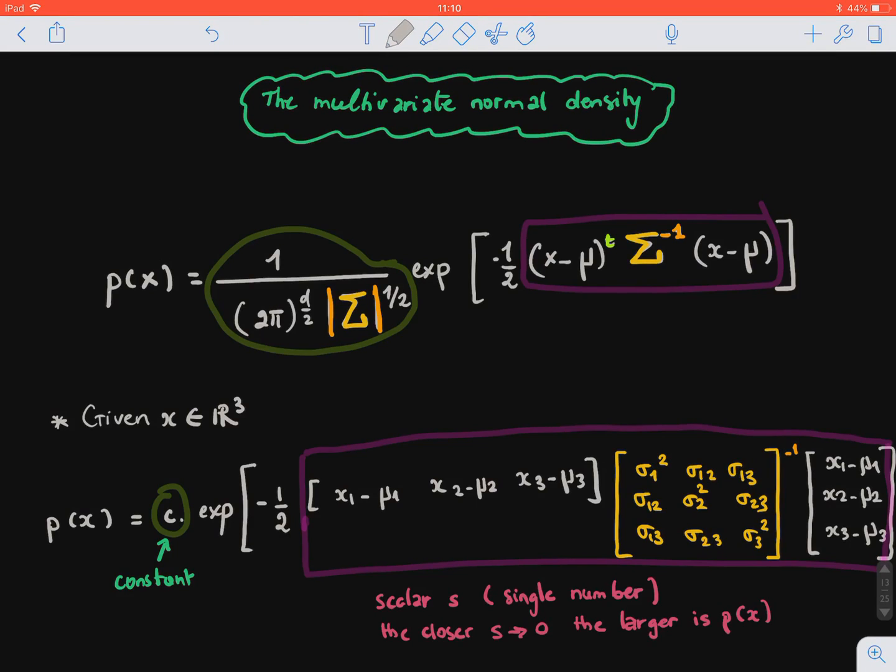Back to the general case where we have x belonging to R^d, so it has d features, and what we would like to compute is the joint probability density for all those features.